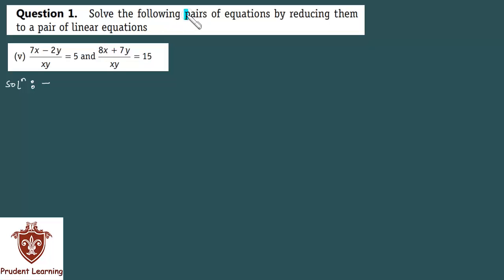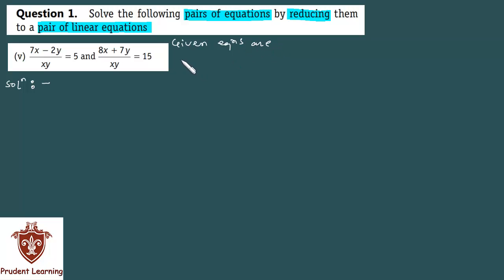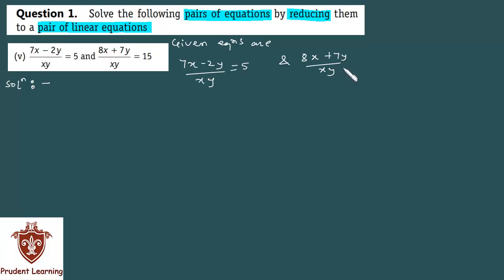Solve the following pairs of equations by reducing them to a pair of linear equations. The given equations are 7x minus 2y over xy is equal to 5, and 8x plus 7y over xy is equal to 15.